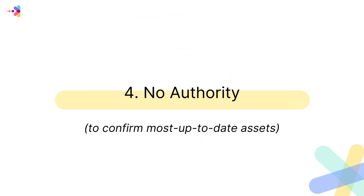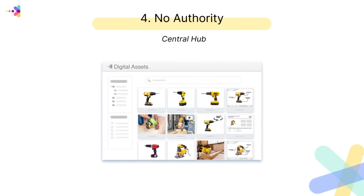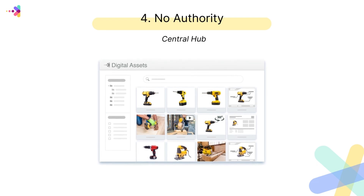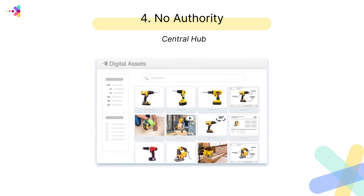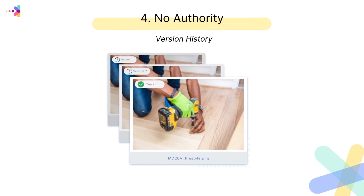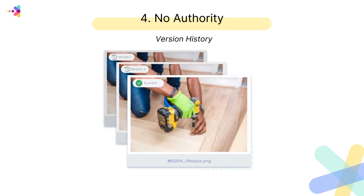Number four is no authority to confirm the most up-to-date assets. Teams oftentimes need help identifying which assets are the most up-to-date and approved for use. And if done incorrectly, assets can end up on the marketplace that are incorrect or out-of-date. This could potentially lead to an increase in product returns, which could be detrimental for your e-commerce company. A reliable DAM solution provides a central hub where teams can easily track and access the latest versions of assets, refer to version history, ensuring brand consistency and accuracy.